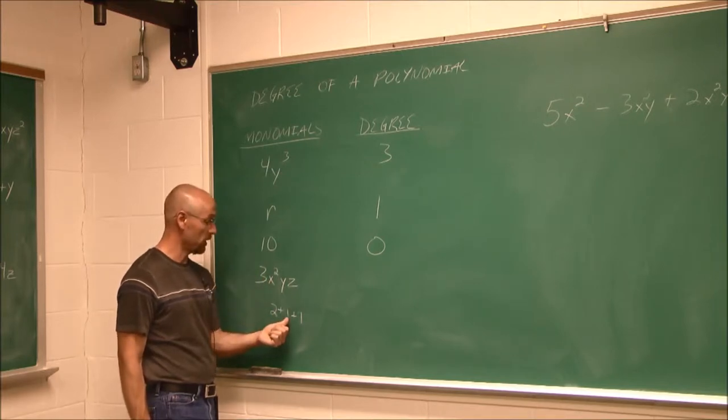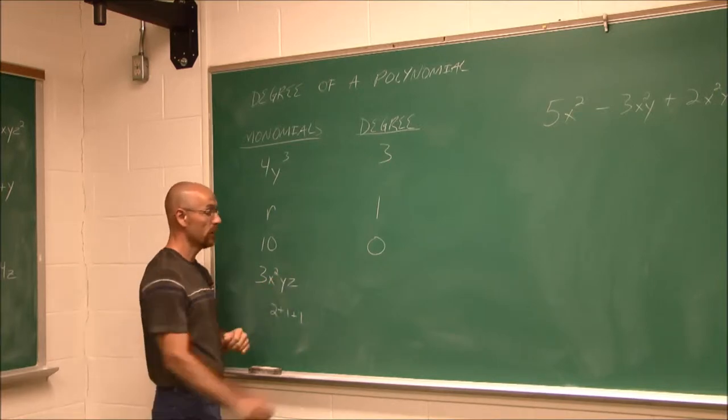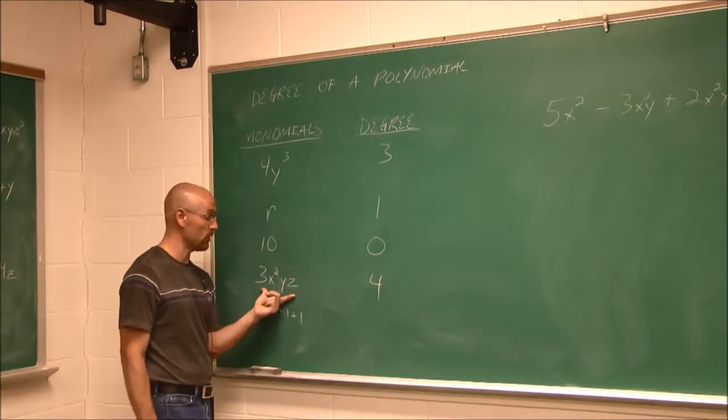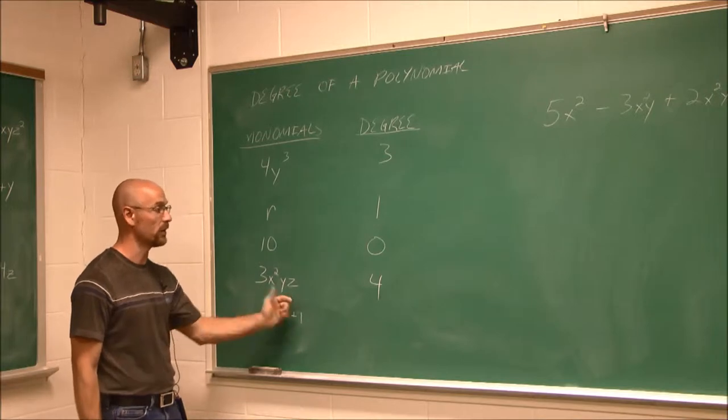So 2 plus 1 plus 1 is 4. So 2, 3, 4. The degree of this polynomial, or in this case, a monomial, is 4.